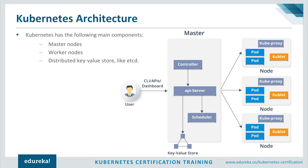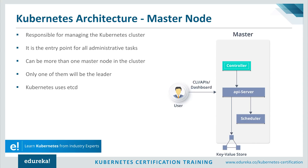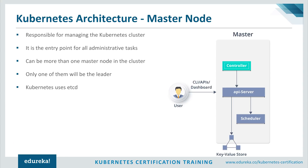Kubernetes architecture has mainly three components: the master nodes, the worker nodes, and the distributed key-value store etcd. The master node is responsible for managing the Kubernetes cluster and is the entry point for all administrative tasks. We can communicate with the master node via CLI, GUI, or APIs. For fault tolerance, there can be more than one master node in a cluster, resulting in high availability mode where only one will be the leader performing all operations and the others will be followers. Kubernetes uses etcd to manage the cluster state, and all master nodes connect to it.